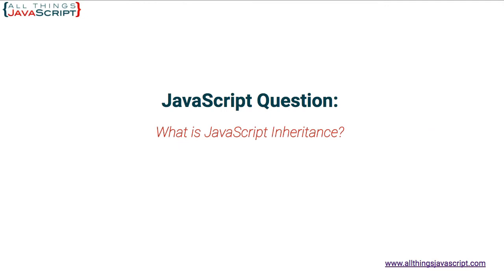Inheritance in a class-based sense is when a class is based on another class — it inherits or receives the properties and methods of that class. JavaScript supports inheritance as well, but JavaScript does not have classes. Inheritance in JavaScript is better described as one object borrowing properties or methods from another object.